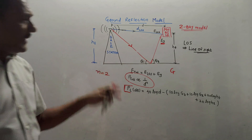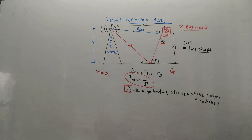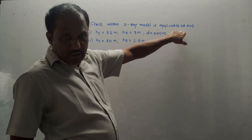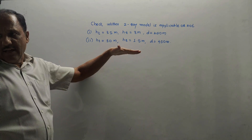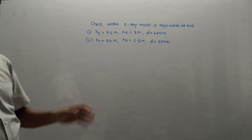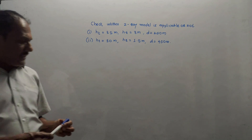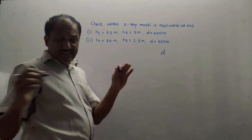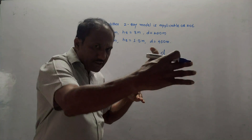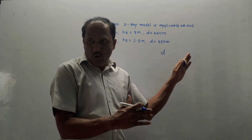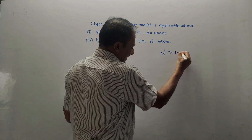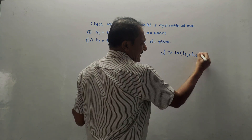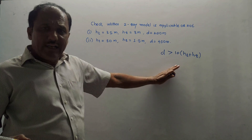Now let us solve a few numericals. The first problem is: check whether the two-ray model is applicable or not — two cases are given. The simple and important condition to check applicability is: the distance D, which is the horizontal distance between base station and receiver mobile, must be greater than 10 times (HT plus HR). Then and only then is the two-ray model applicable.